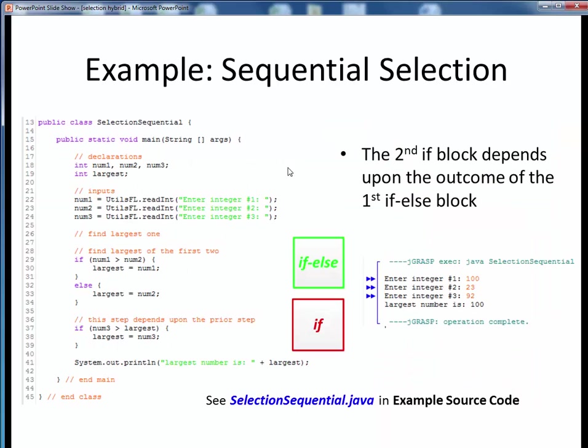Here's a simple example demonstrating sequential selection. What we're doing in this example is reading in three ints, then finding the largest of those three numbers. To do this, we're first using if-else to find the larger of the first two numbers, then an if to compare that intermediate result to the third number. The general form of our logic is shown by these two selection blocks in the middle.